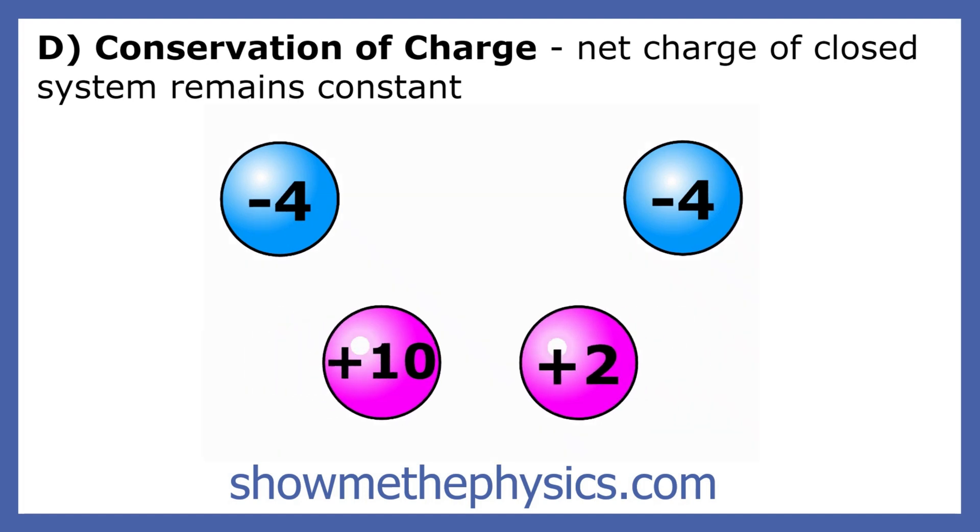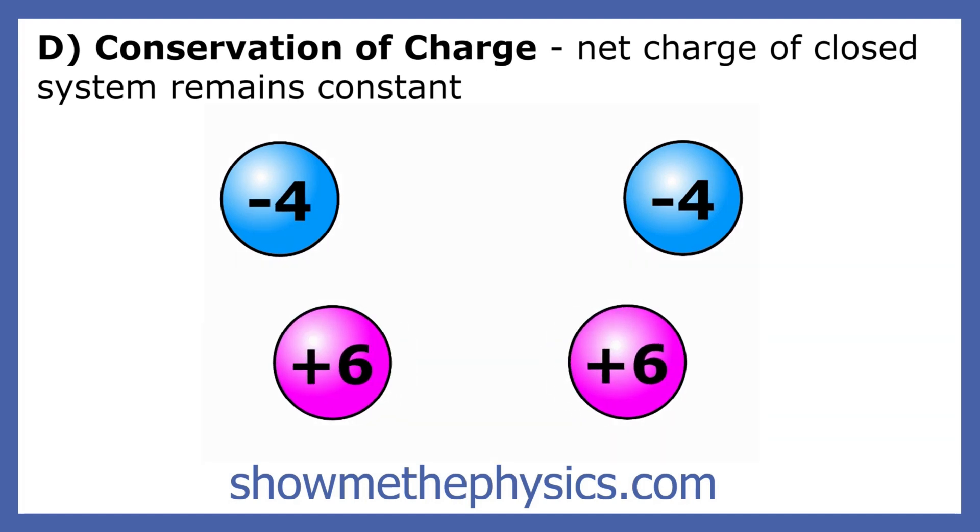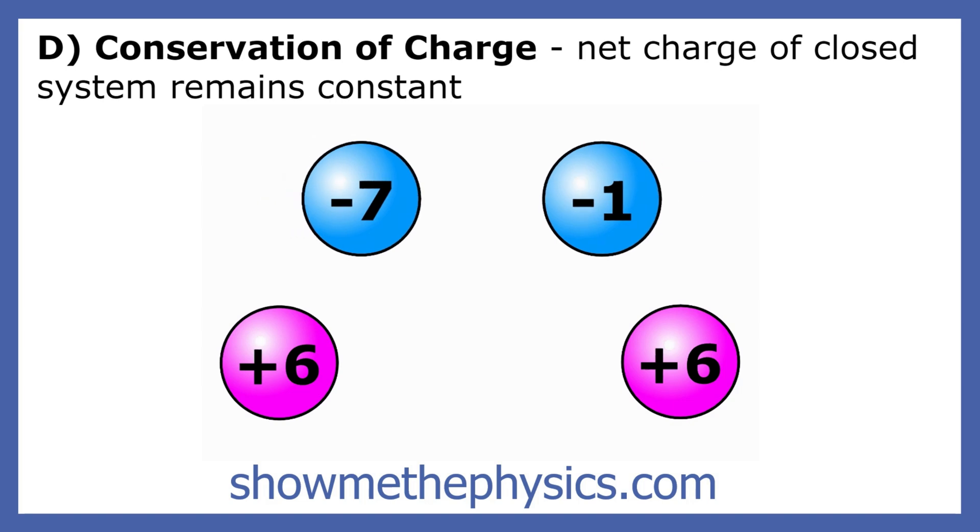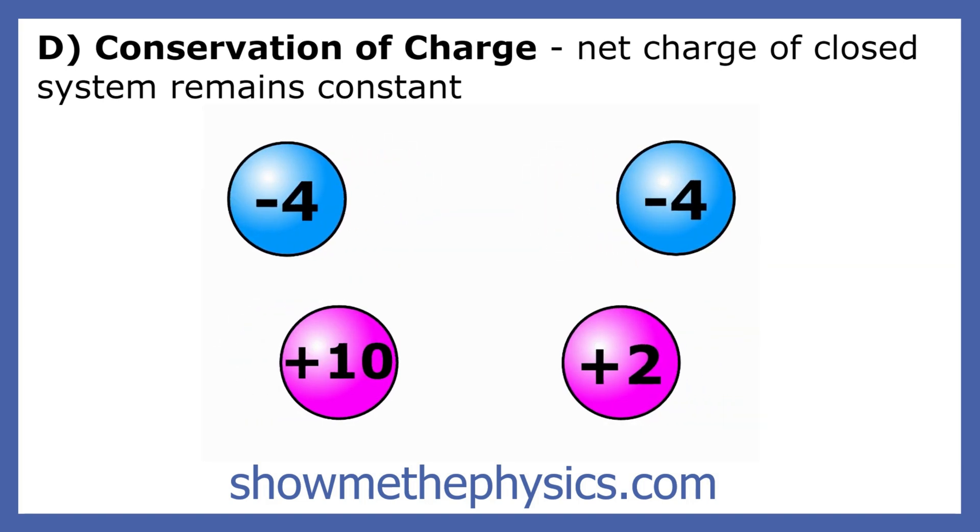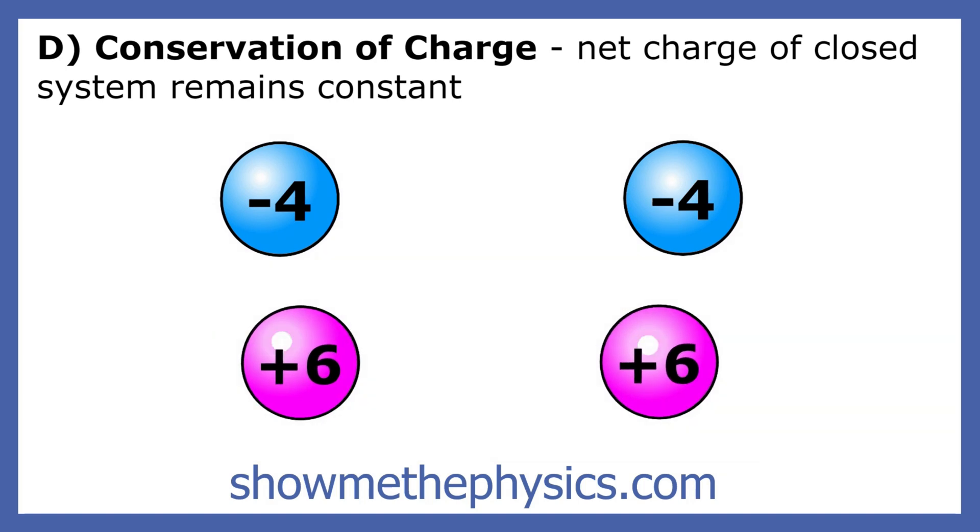In this presentation, we will discuss what happens when two or more charges come into contact and are separated. Because charge cannot be created or destroyed, the net charge in a closed system remains constant.